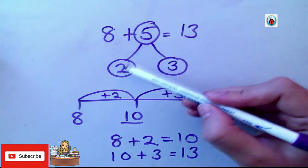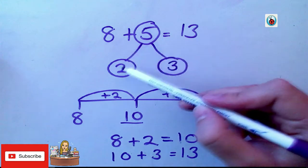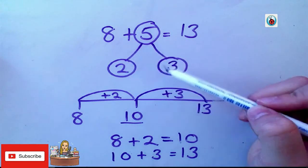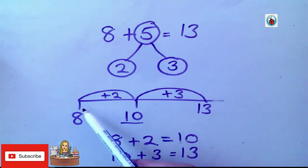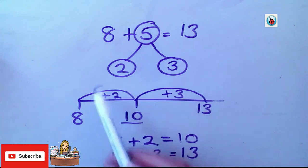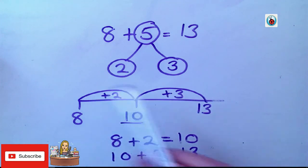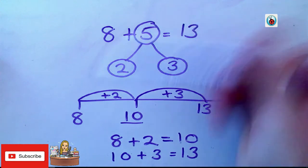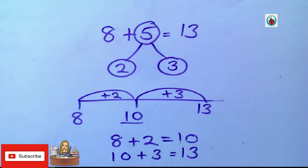So, what I did, I partitioned 5 into 2 different numbers. And then, I added my 2 first to get to my 10. And then, I added the rest. So, overall, I added 5, but I just did it in 2 steps to make it easier to work with. So, when we get to bigger numbers, it will also be easier to work with.